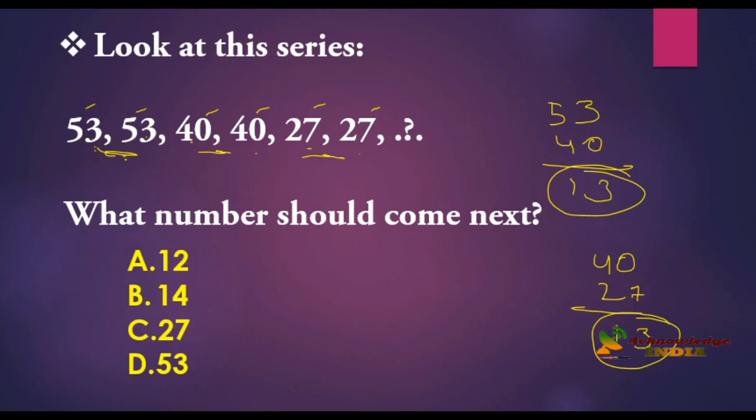So 53, 53 repeating, after that 53 minus 13 is equal to 40. So 27 minus 13 is equal to 14. So the answer is 14. Option B is the correct answer. If there is a repetition series, we will get 14 here also.